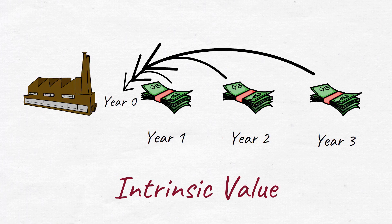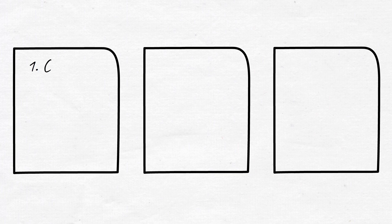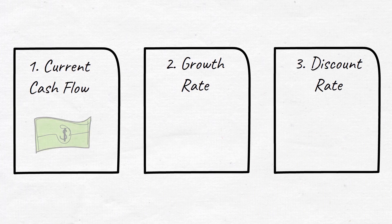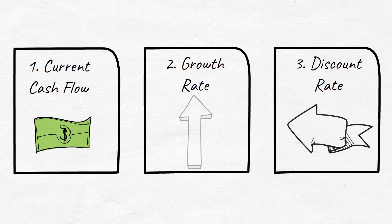In order to do this calculation, we need three ingredients. One is the current cash flow, two is the cash flow growth rate, and three is the discount rate — in order to discount the cash flows back to the present day and determine our intrinsic value.